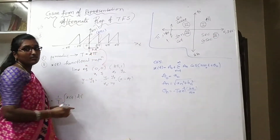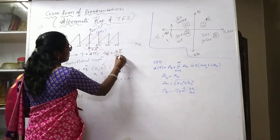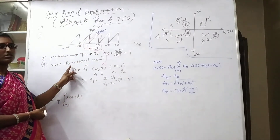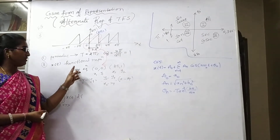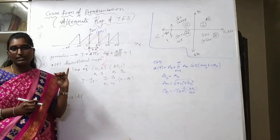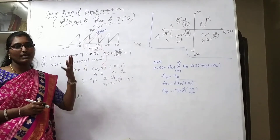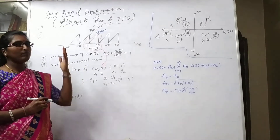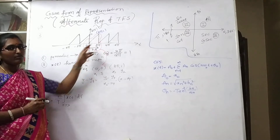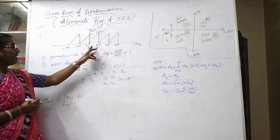The fundamental time period is 2π. Then ω₀ = 2π/T = 1. The signal is in graphical representation and we need to represent it as a function. In previous problems we had a sinusoidal signal and a square wave. Now the signal is a sawtooth signal, and for any such signal we need to find the line equation.